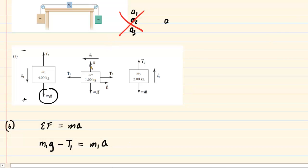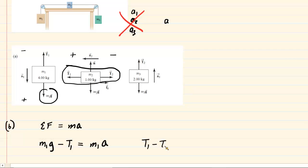Next, we look at M2, examining forces in the x-direction. M2 is accelerating to the left, so we call that direction positive. The forces are: positive T1, minus T2, and minus the frictional force Fk. Setting the sum equal to M2 times A gives us T1 minus T2 minus Fk equals M2 times A.